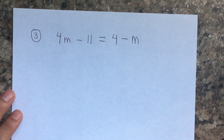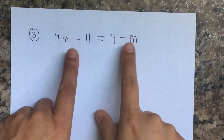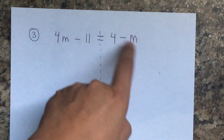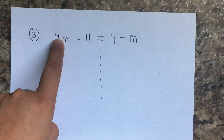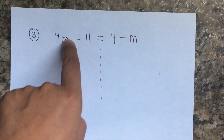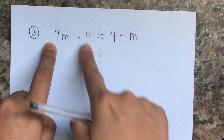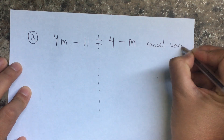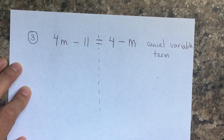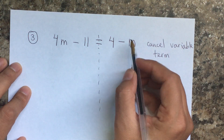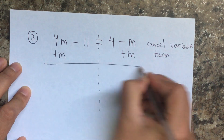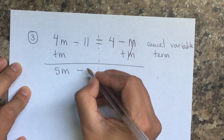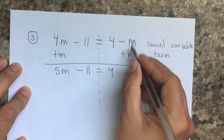Okay, number three. Again, first thing when we have variables on both sides: cancel the variable term. Some people ask, can I cancel this one first? Yes, you could, but if you get confused, cancel the m. Notice here we are subtracting m, so the opposite is to add m to both sides: 4m plus m is 5m, and the rest you just bring down the same.